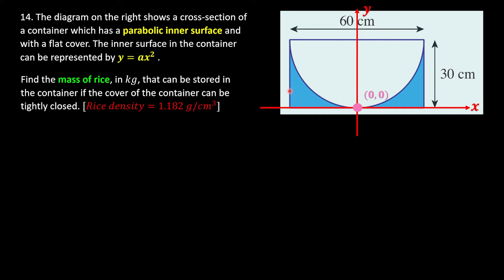Since the height of the container is 30, the top of the parabola is at y = 30. The container has a total width of 60, and since the parabola is symmetric about the y-axis, each side is 30 from the axis. So the two top-edge coordinates are (−30, 30) and (30, 30).